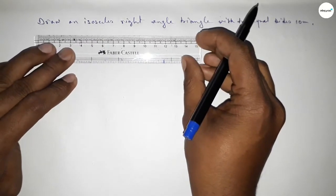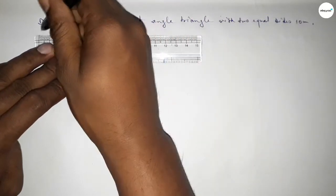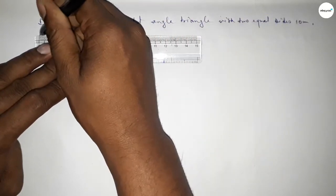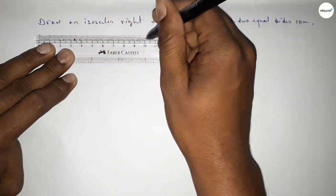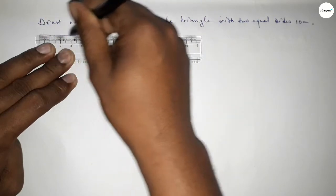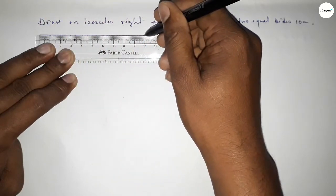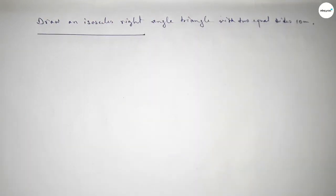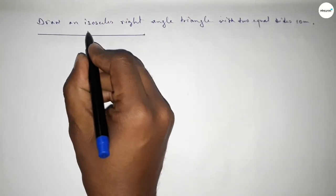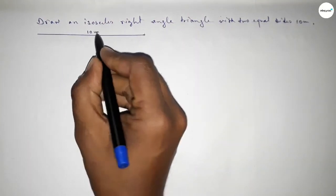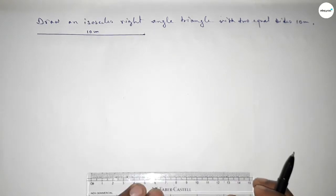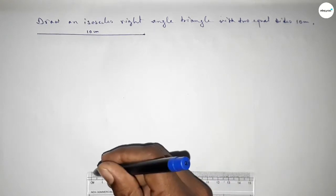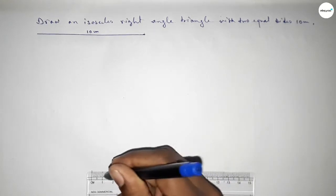First of all we have to draw a line of length 10 centimeter. So drawing here a line of length 10 centimeter — this is the 10 centimeter line.